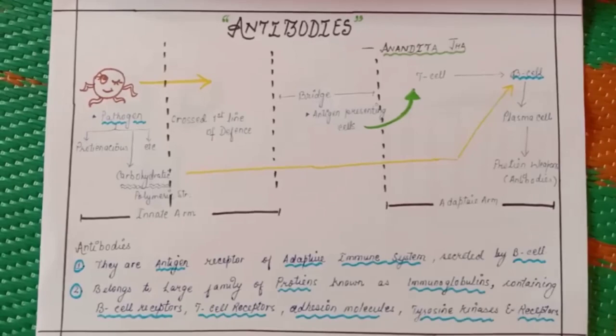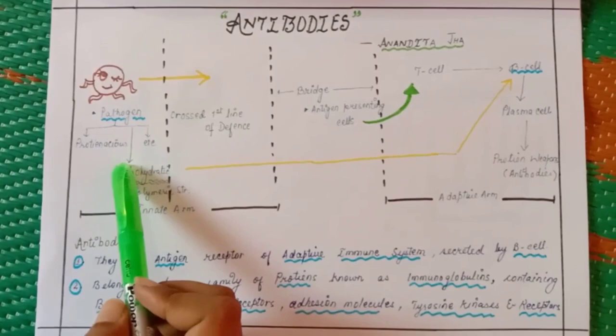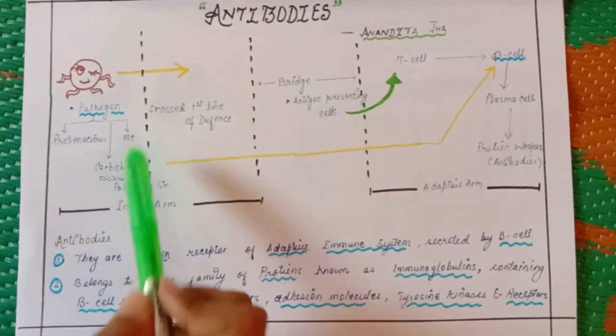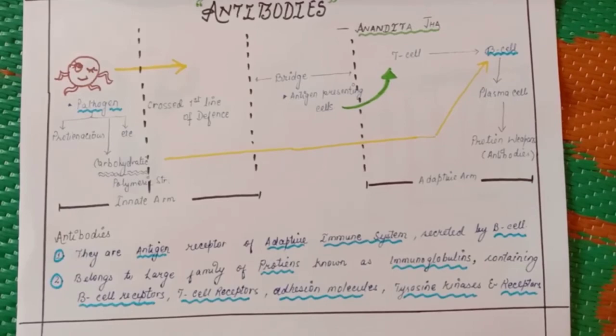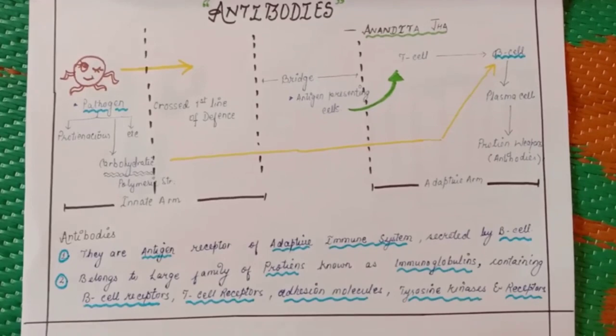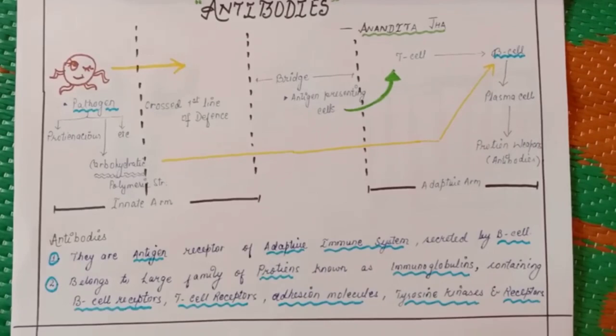The pathogen can be, as we know, proteinaceous, it could be carbohydrate, or it could be any other biomolecules. It can be nucleotides also, any environmental DNA, DNA content that is present in the environment. They can also act as an antigen for our body or pathogen.